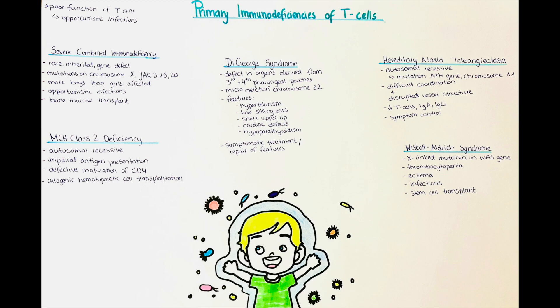The next immunodeficiency disorder is MHC class 2 deficiency, also called Bare Lymphocyte Syndrome type 2. It is inherited autosomal recessively. As the name implies, immune cells of these patients have a deficiency of the MHC class 2 molecule on their cell surface. MHC molecules were discussed in part 1 as the cells' sort of passports, recognizable to other immune cells and present on virtually all nucleated cell surfaces.